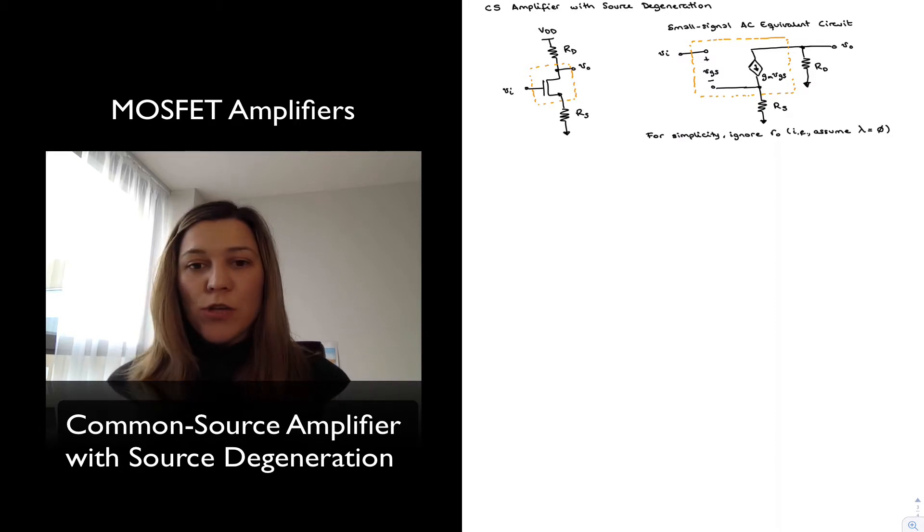So I have redrawn my common source amplifier, exactly the same as the previous case except now I have resistor RS connected to the source of the transistor.